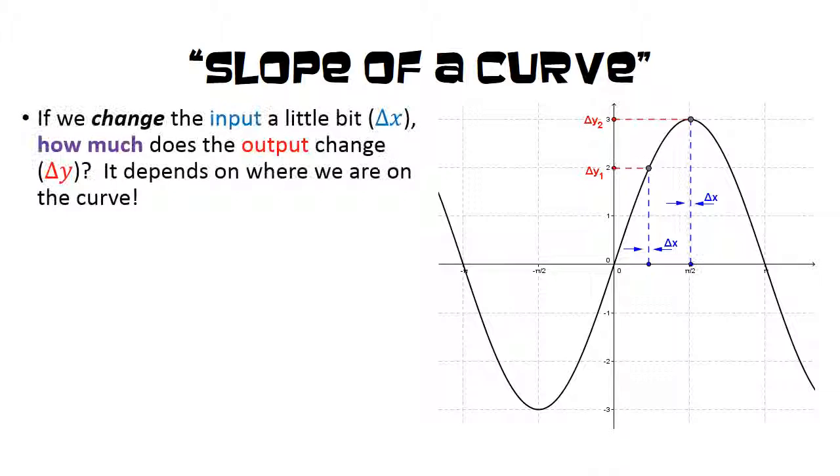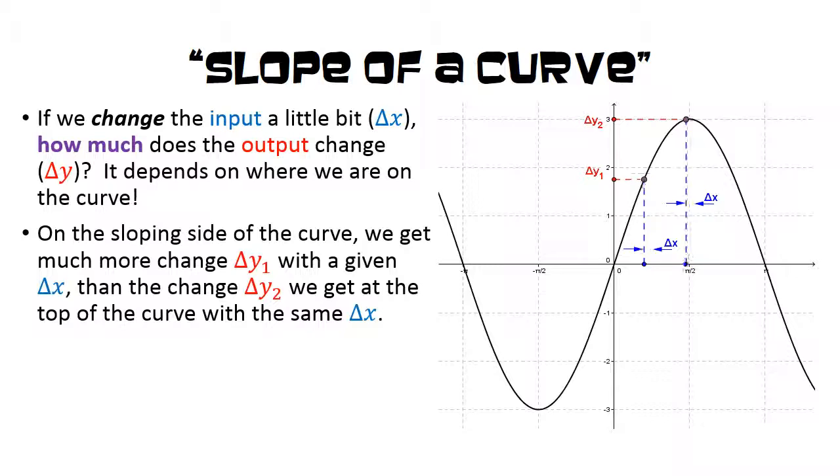First, let's consider the slope of a curve. If we change the input a little bit, which we'll call delta x, how much does the output change, which is what we'll call delta y? The answer is that it depends on where we are on the curve.